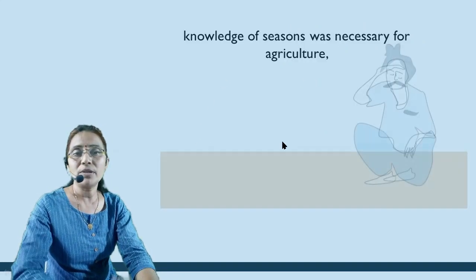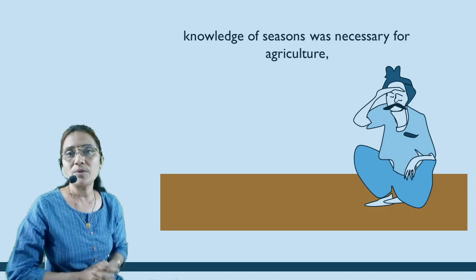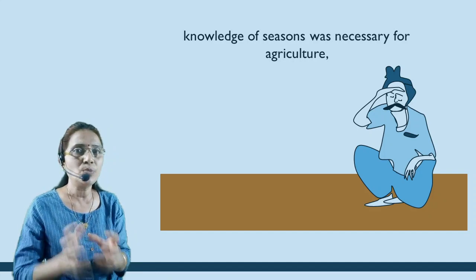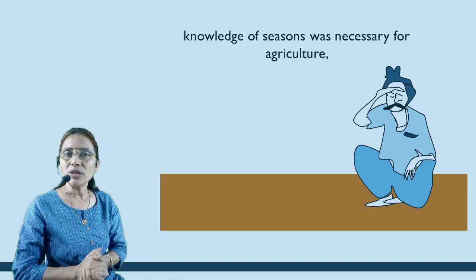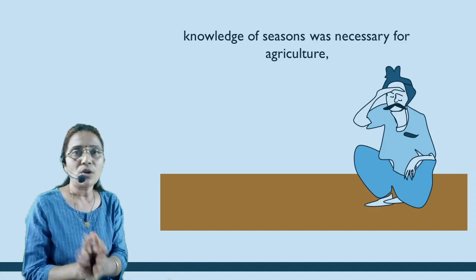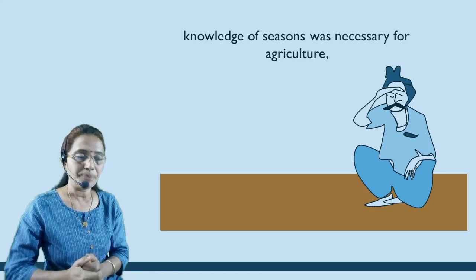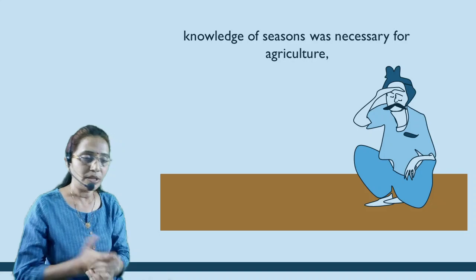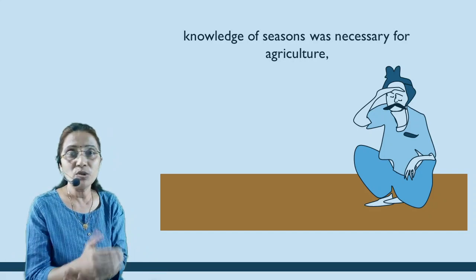Knowledge of seasons was necessary for agriculture. The two main Indian crop seasons are Kharif and Rabi. In the Kharif season, crops like maize, jowar, and soybean are sown at the onset of monsoon and harvested in September-October. The Rabi season crops are sown in winter and harvested in summer. The nakshatra — which is the portion traveled by the moon in one day — was used to track these seasons. Indian astronomers identified 27 nakshatras.